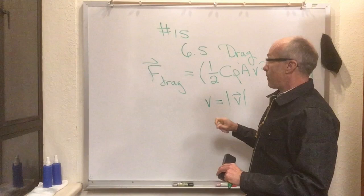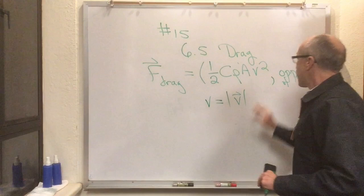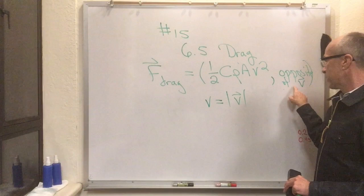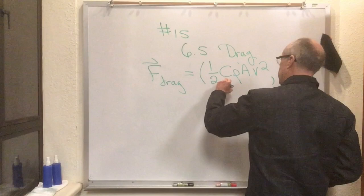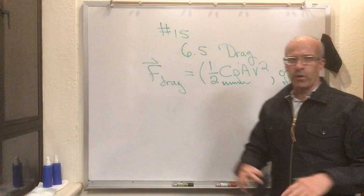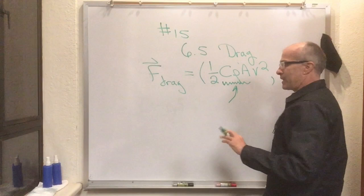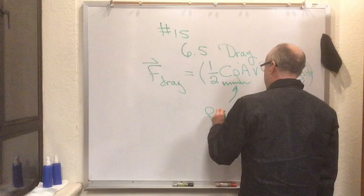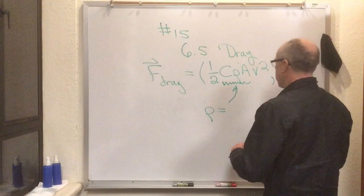The direction of drag is always in opposition to the direction of motion. Okay, so what are all these constants? These constants are just a convenient way of sorting out the problem. Rho is the density of whatever material you're moving through. So rho for air, there's a value in the textbook, and it's going to be some number of grams per cubic meter.